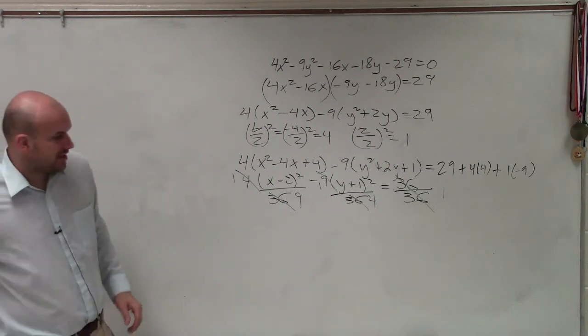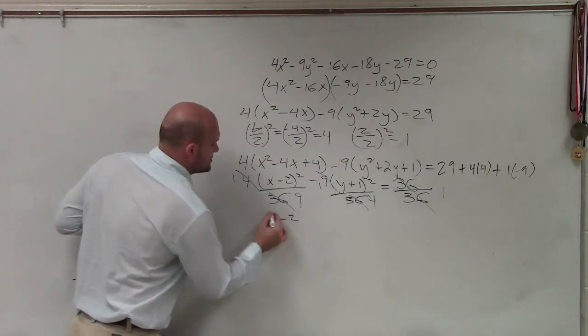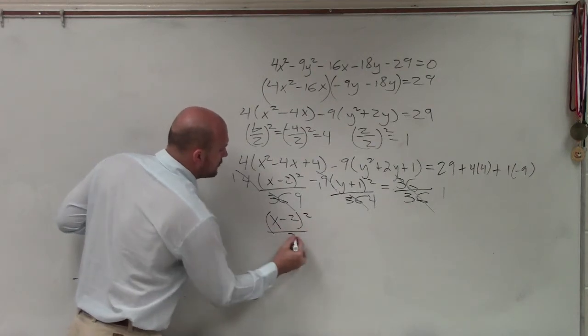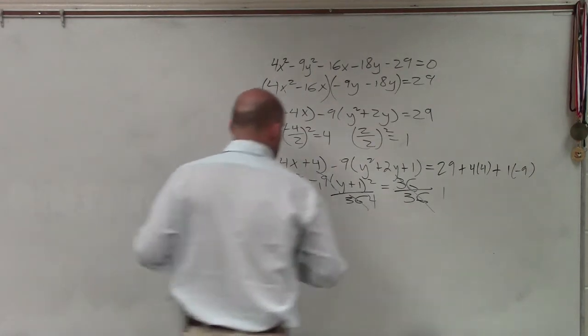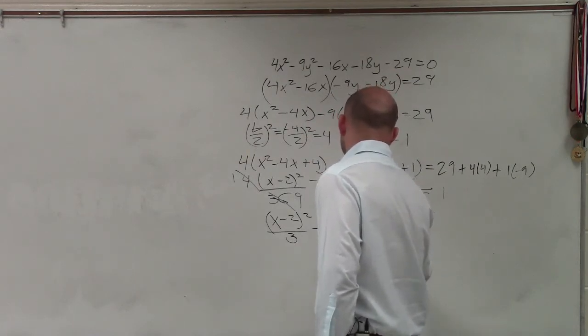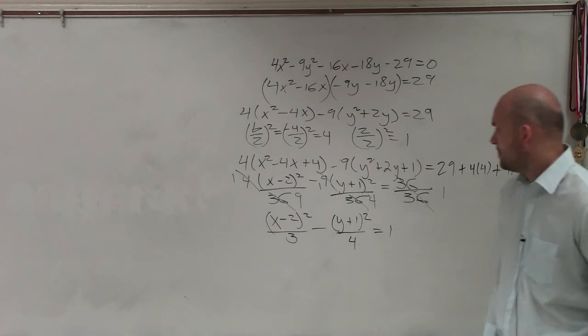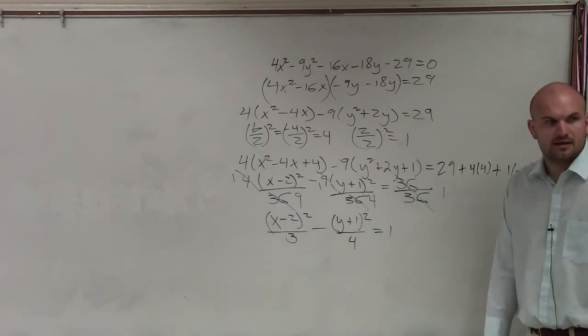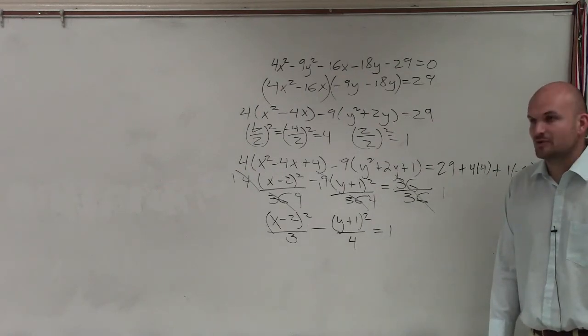So therefore, ladies and gentlemen, now what I have is x minus 2 squared over 9 minus y plus 1 squared over 4 equals 1. Does everybody see that? Anybody have any questions on that?